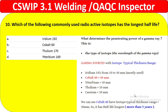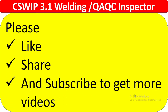Question 10: What determines the penetrating power of gamma rays? The answer is the type of isotope. Iridium-192 is used for material thicknesses from 10 to 50 mm; cobalt-60 is used for thicknesses greater than 50 mm and has the longest half-life. The correct answer is B — the type of isotope used. That covers all 10 questions with explanations. If you have any questions, please reply. Thanks for watching — please like, share, and subscribe for regular videos.